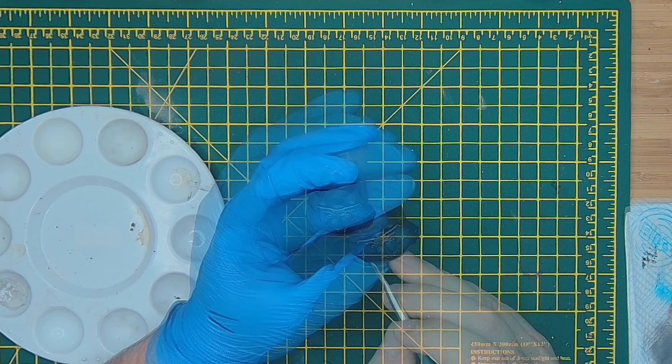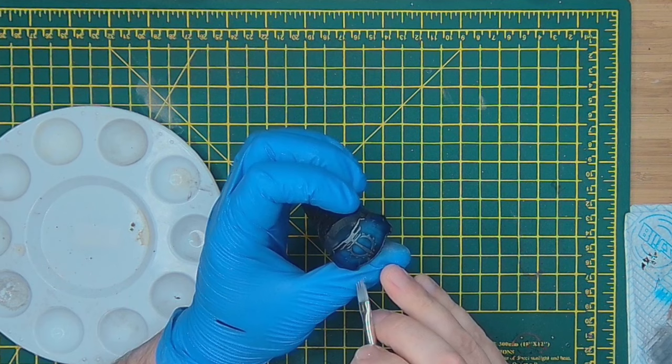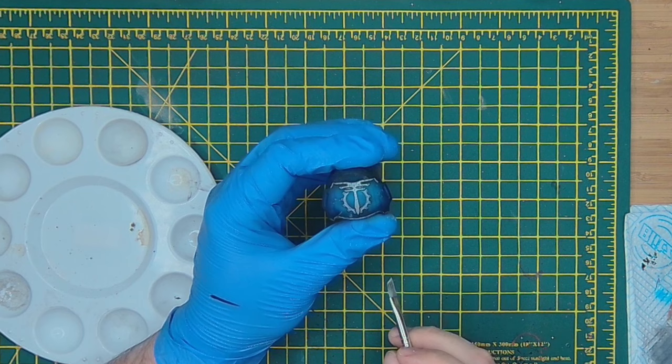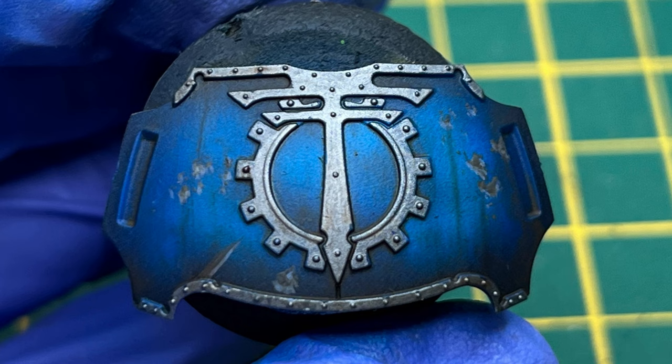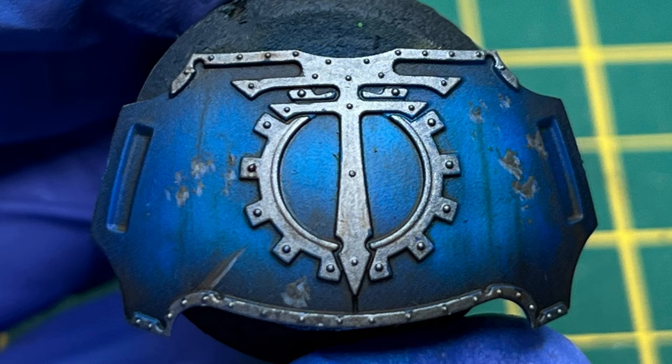Just keep manipulating the paint. You can use your brush to pull it into areas that you want it darker. There you have it, one battlefield ready Tempestus armor plate. Really quick, really easy, great use of contrast as well and it's ready to go on your model. Thank you very much for watching and I'll see you again next time.